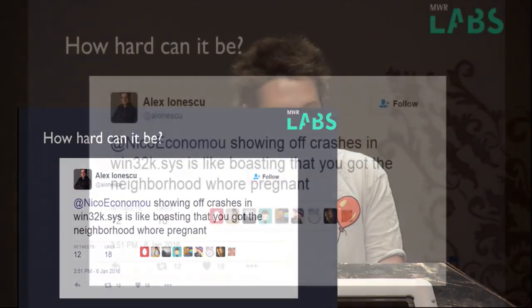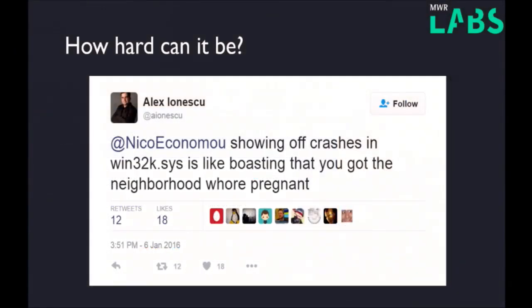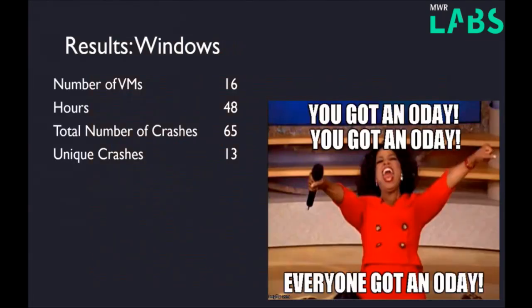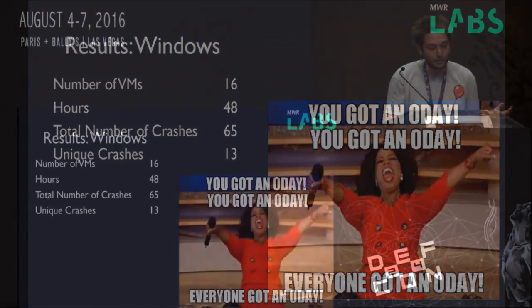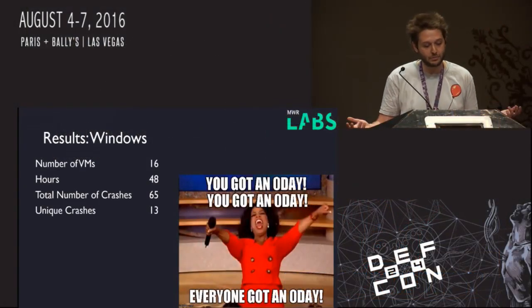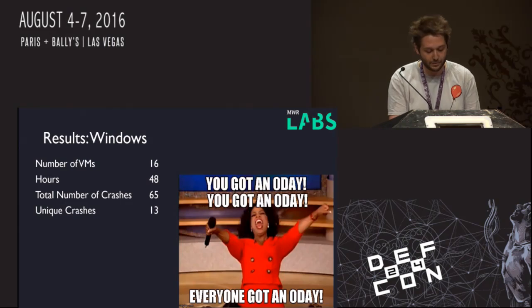So, how hard can it be? If you look over at Twitter, it would appear everyone has a Win32k 0-day — and so do we. About a month ago we did a run, purely a test run to make sure the fuzzer was pretty stable. As you can see: 16 VMs, just 48 hours. We got 65 crashes, 13 of those unique, which I didn't think was too bad — 13 0-days in Win7.